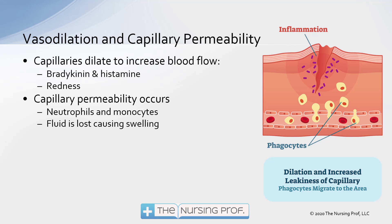We have the vasodilation and capillary permeability part. The capillaries will dilate to increase blood flow — caused by bradykinin and histamine — stimulating those capillaries to vasodilate. What we see on physical exam is redness, swelling, and warmth in the area. Capillary permeability occurs: neutrophils and monocytes leave the capillaries, get into the tissue, and start eating up bacteria, rust, and anything foreign that doesn't belong there. Fluid is also lost, causing swelling, as water follows the neutrophils and monocytes leaking out of the capillaries.